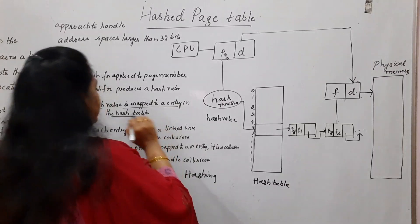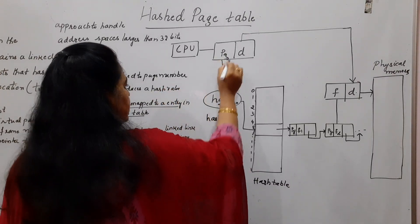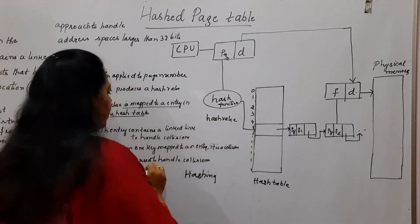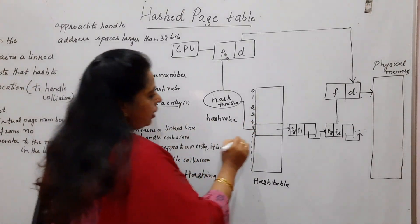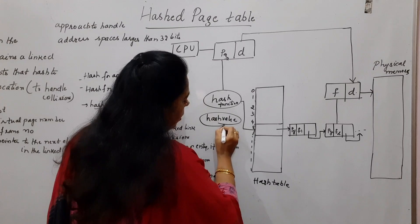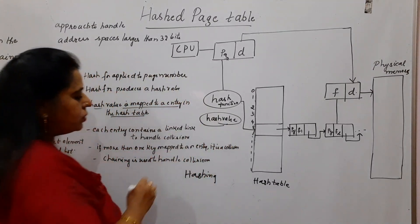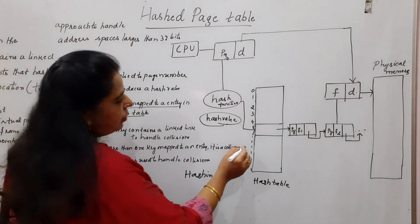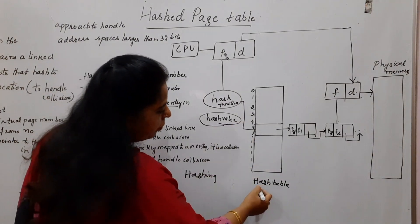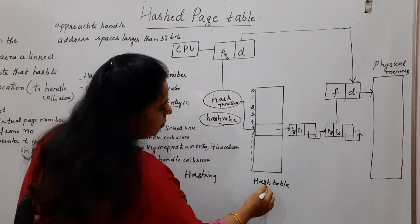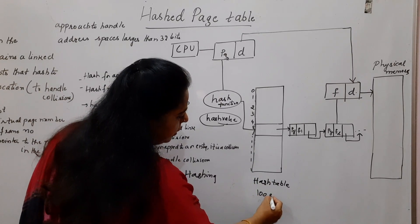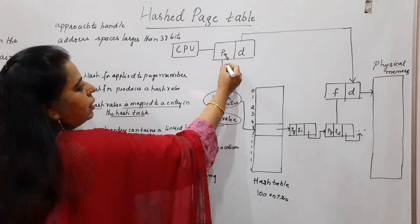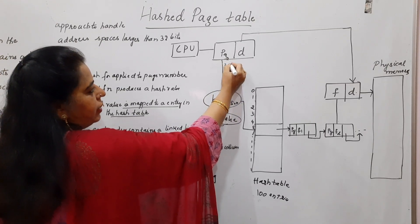Now when you apply this hash function, hash function produces a hash value and this hash value is mapped to an entry in the hash table. Once you get a hash value here, you are using the modulo operation. And when we try to perform the modulo with the number of entries in the hash table, let us assume this hash table has got 100 entries.